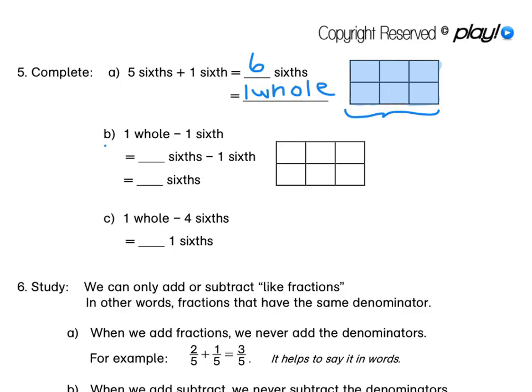For B, if we start with 1 whole — I'm going to shade this whole block. I've shaded the whole block, or I've shaded 6 sixths, because those two mean the same thing. So now 6 sixths minus 1 sixth: I'm going to take 1 of these sixths away, and that means we are left with 5 sixths.